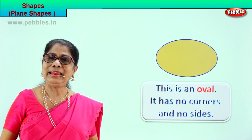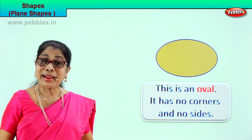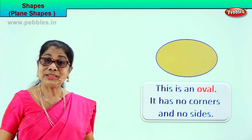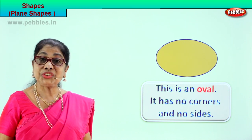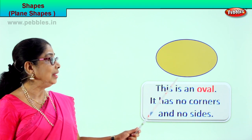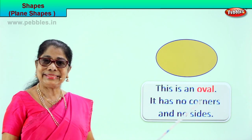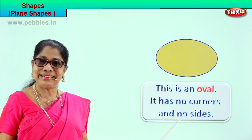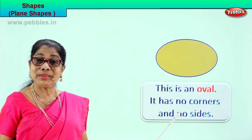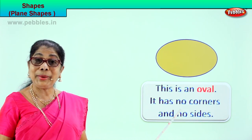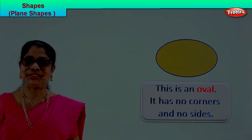So today we learnt plain shapes: rectangle, square, circle, oval, and a triangle too. We learnt plain shapes.